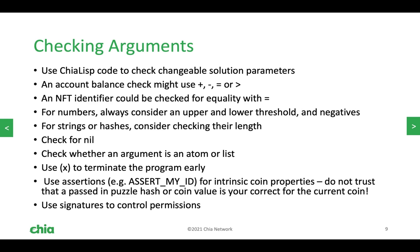A Chialisp program is a program like any other, so argument checking is important. Most of these are standard things you think about when programming, except in this case your program is moving money, so you really want to check every branch and every value. One nice thing is that Chialisp only has two types of things: atoms and cons cells. So there aren't a lot of different types or data formats, and you won't have a proliferation of if-statements checking different types unless you're developing quite a sophisticated contract.